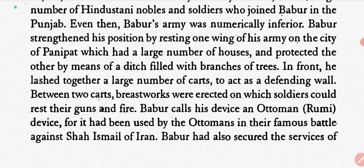Babur strengthened his position by resting one wing of his army on the city of Panipat, which had a large number of houses, and protected the other flank by means of a ditch filled with branches of trees. In front, a large number of carts were placed to act as a defending wall. Between two carts, breastworks were erected on which soldiers could rest their guns and fire.